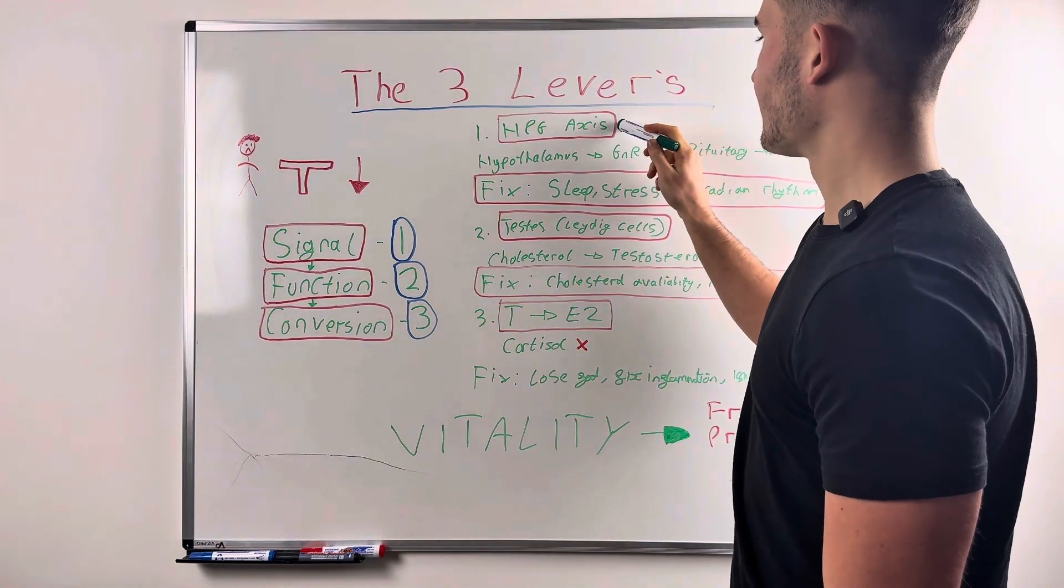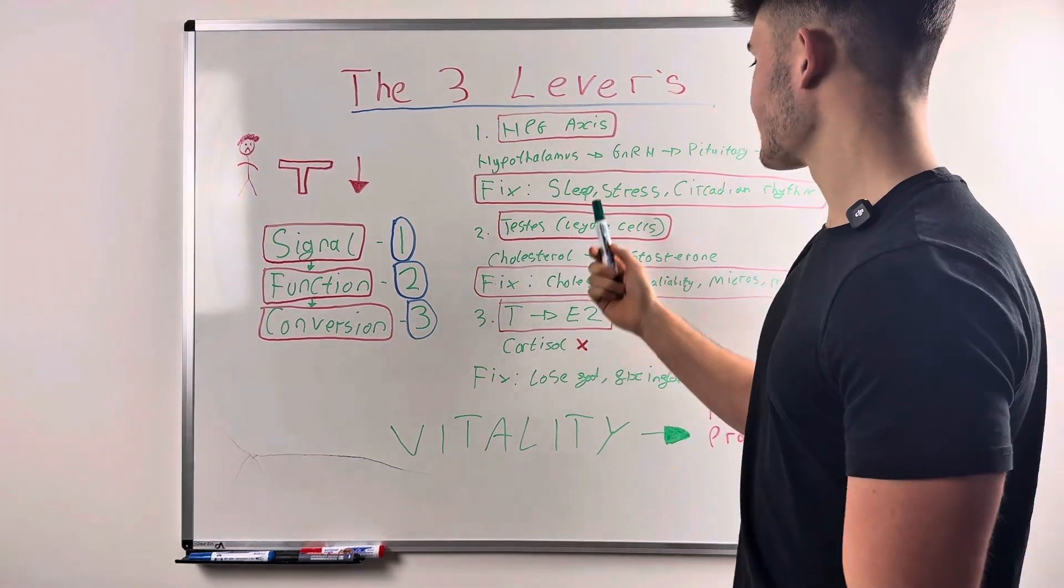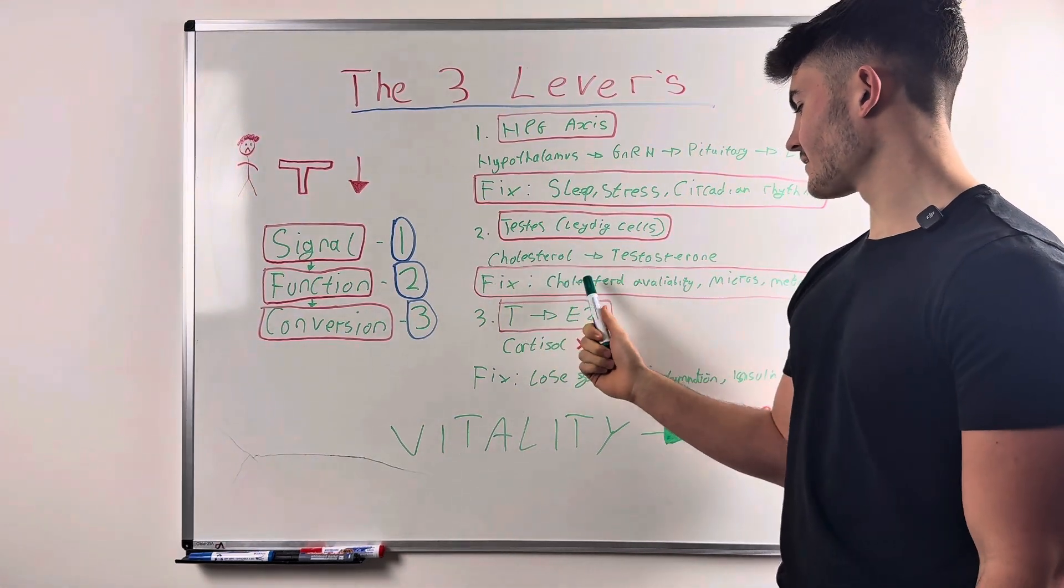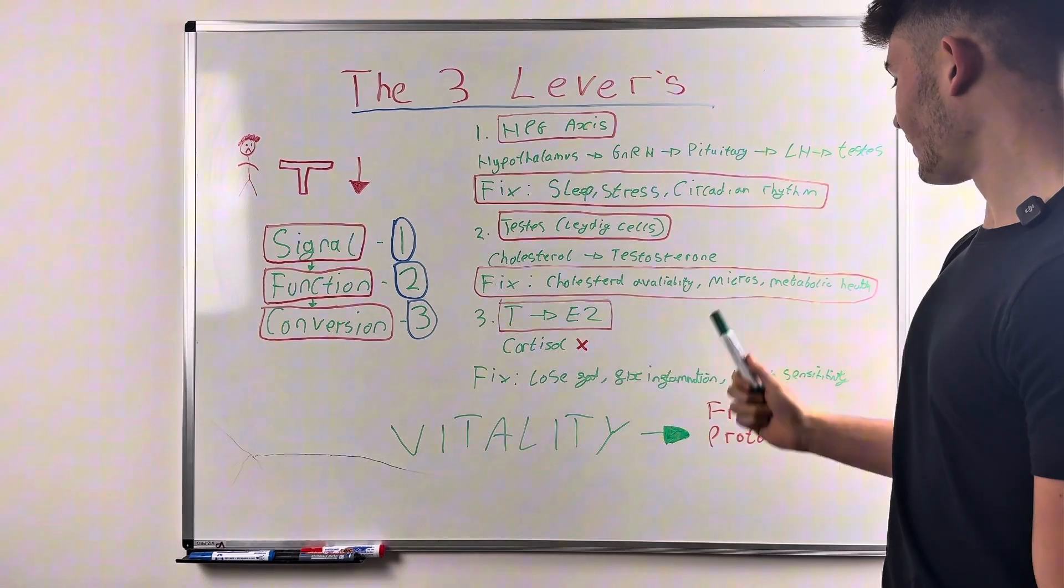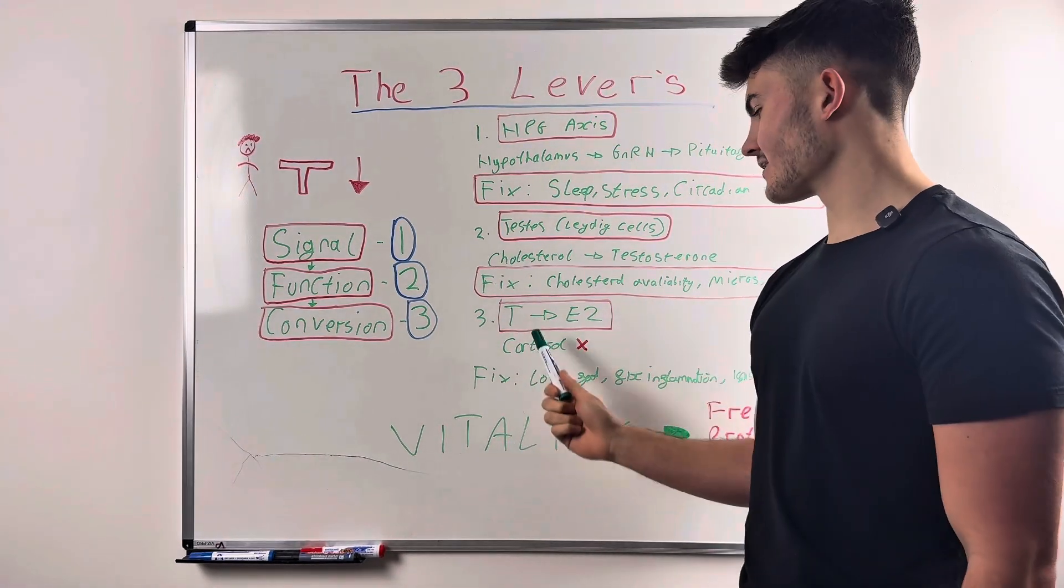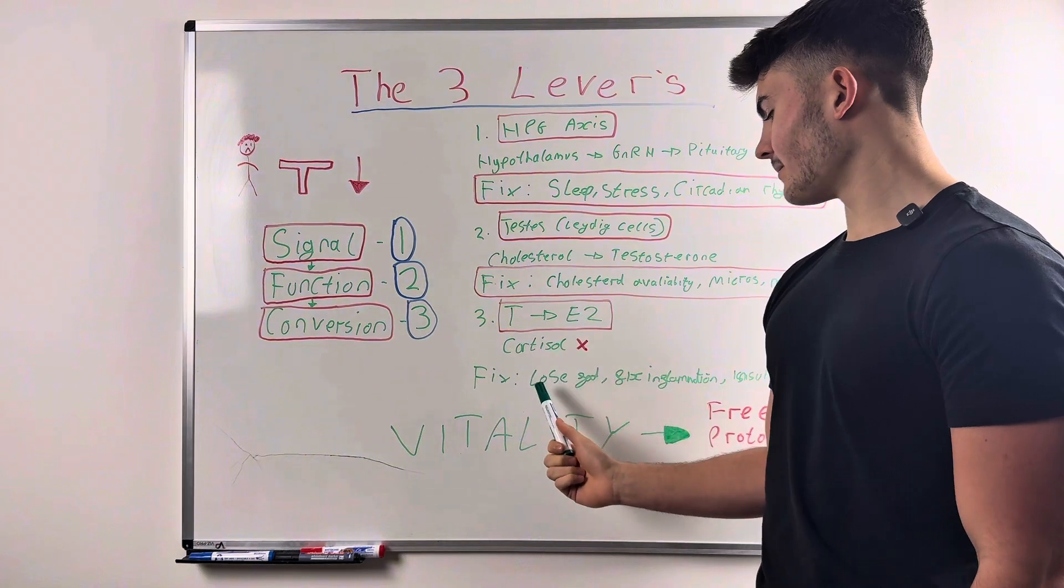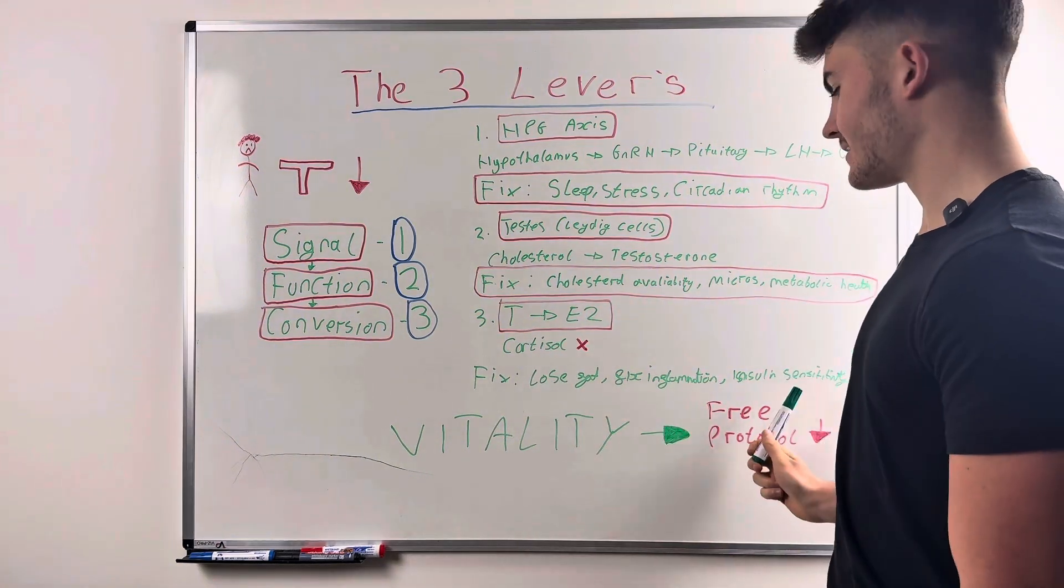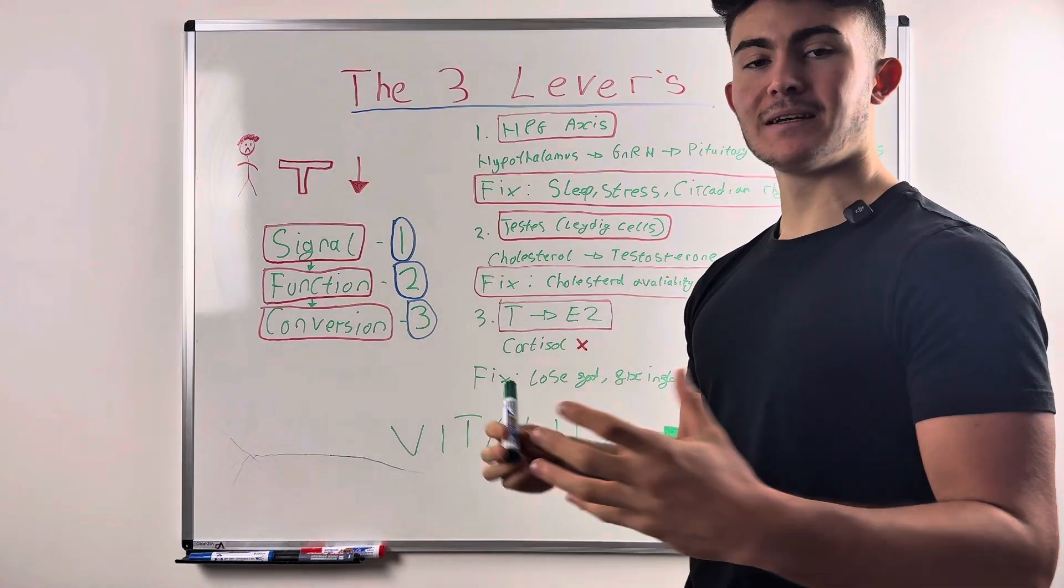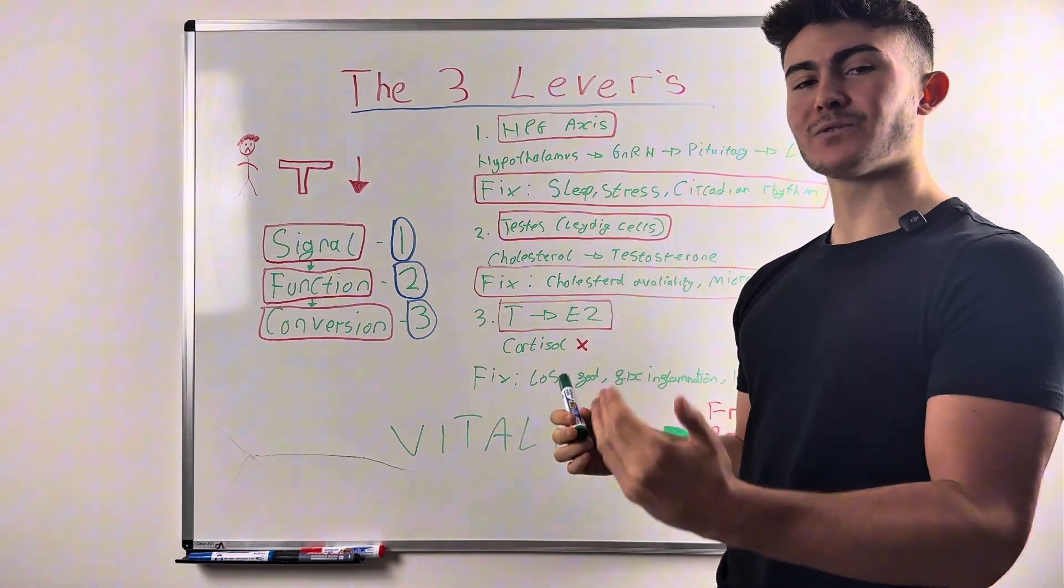We do this by fixing the HPG axis through sleep, stress, and circadian rhythm alignment. Then function with the Leydig cells. This means fixing cholesterol availability, micronutrients, and our metabolic health. And then we want to minimize the conversion of testosterone into estradiol by losing fat, fixing inflammation, insulin sensitivity, etc. So we can have the most vitality possible and live the best quality of life. Because this is what it's all about.